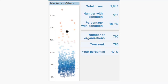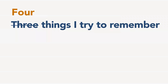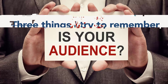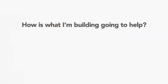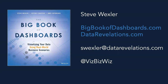Going back to the first things I started with, I've now changed to four things to keep in mind. One: who is your audience? Two: what's the message? Three: for the largest number of people, provide the greatest degree of understanding with the least amount of effort. And four: as you're making this stuff, how is what you're building going to help your audience — is it what they need to see, or are you showing off? In a business context, I don't think you need to be showing off. I do hope you'll consider purchasing The Big Book of Dashboards — a lot of the dashboards are in Tableau format and downloadable from bigbookofdashboards.com.